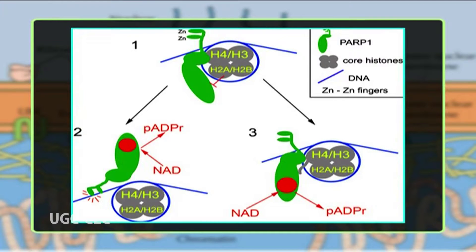The most important lamin-associated polypeptides are LAP1, LAP2, emerin, lamin B receptor, otefin, and MAN1. The non-random organization of the genome strongly suggests that the nuclear lamina plays a role in chromatin organization. Lamin polypeptides have an affinity for binding chromatin through their alpha-helical rod-like domains at specific DNA sequences called matrix attachment regions. Lamin A and B can also bind core histones through sequence elements in their tail domains.